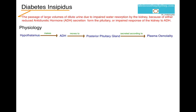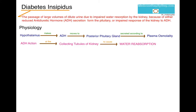Let me first explain the normal physiology. Normally at the hypothalamus, ADH is made, which then moves to the posterior pituitary gland along its axonal pathways, where it is then secreted according to the plasma osmolality. One of the main actions of ADH, when secreted, is to act at the collecting tubules of the kidneys to cause water reabsorption.